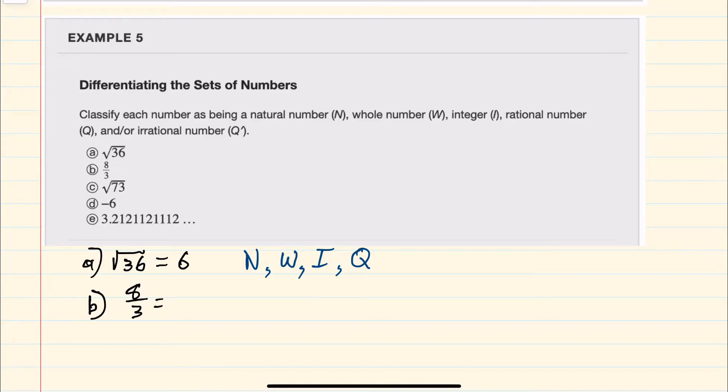For b, we have eight thirds. Eight thirds is not a counting number, or a whole number, or an integer. However, it is a rational number. It's written as an integer over an integer. So b will just be indicated as rational.